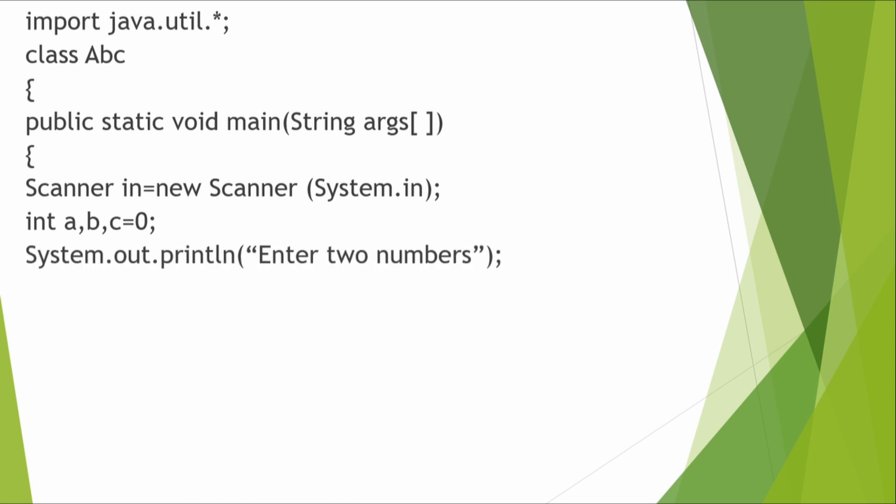Next is System.out.println — this is the print statement in Java. In earlier languages like Basic you would just write 'print', but here you write System.out.println or System.out.print. 'println' is line-wise print and 'print' is normal print. Notice that 'System' has a capital S — since Java is case sensitive, if you write 'system' in lowercase you will get an error. Here we print the message 'Enter two numbers' which will display on the output screen.